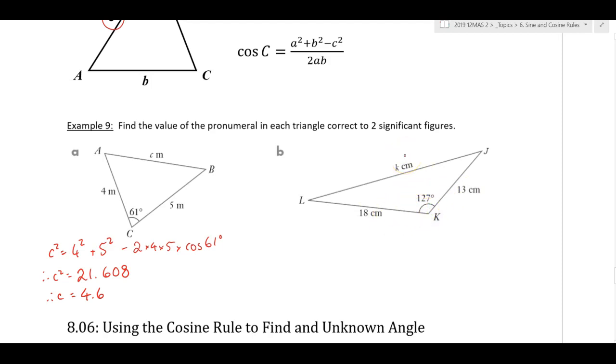I've got two sides and the angle in between, the included angle. And I want to find the third side. It's a cosine rule question. K squared is 18 squared plus 13 squared minus 2 times 18 times 13 times the cos of 127 degrees.